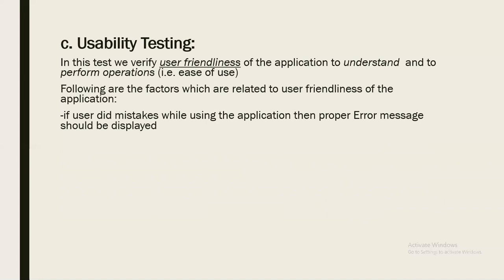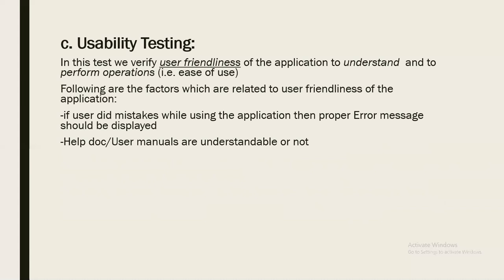One factor is error messages. Whenever we perform some invalid operation in the application, will the application provide a proper, meaningful error message or not? We have to check whether the error message is meaningful or not. That is one usability test factor.